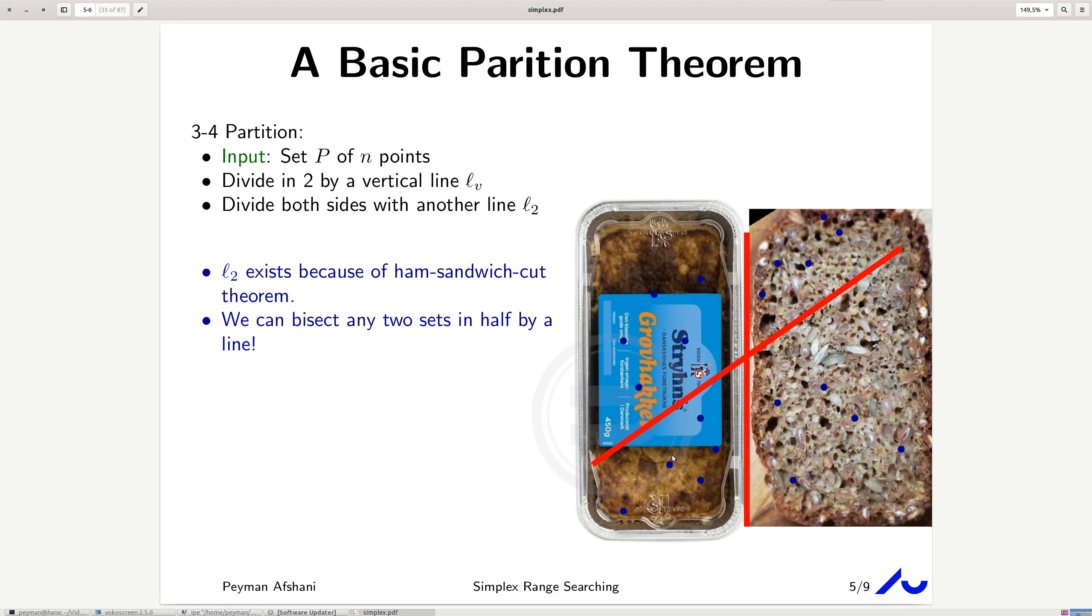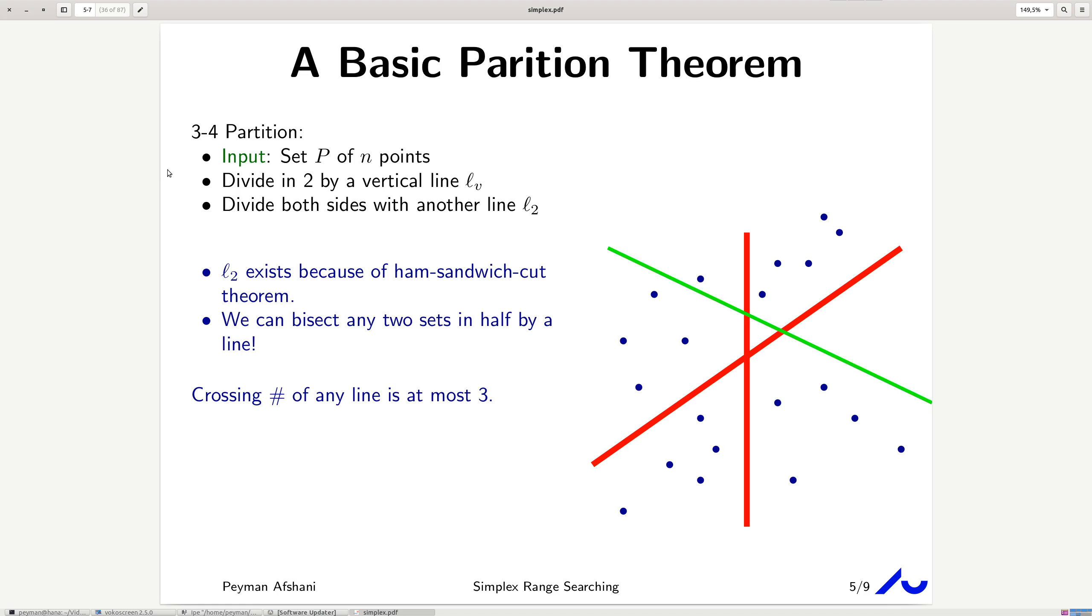But, in general, this theorem is true for d-dimensional space. Interestingly, in 2D, you can prove it, it's not too difficult to prove it in 2D, but in higher dimensions, the proof that I know is topological, and it uses a certain topological theorem known as Borsuch-Colomb theorem. But, assuming the existence of this ham sandwich cut, then we can get this 3-4 partition.